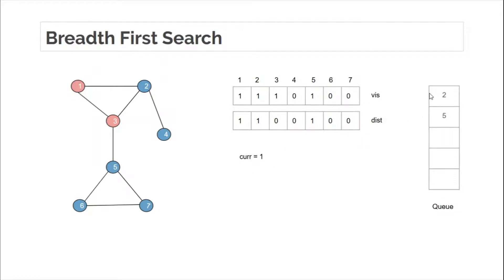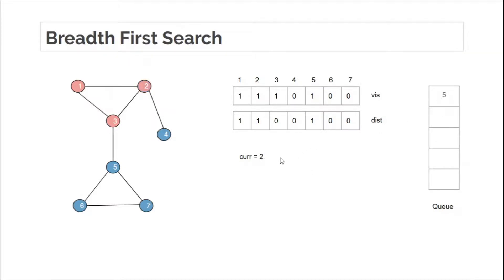Next, current node becomes 1. In the adjacency list of 1 there are only 2 and 3, but both are already visited, so we cannot add anything to the queue. The while loop runs again, queue is not empty, so we take the front element. Node 2 becomes the current element and 5 moves one step ahead.